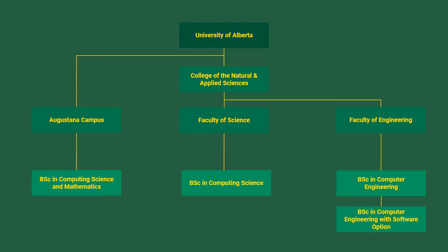At the U of A, we offer programs across our faculties and campuses that will prepare you for careers in both fields. We have a Bachelor of Science in Computing Science and Mathematics through the Augustana campus, a Bachelor of Science in Computing Science through the Faculty of Science, and a Bachelor of Science in Computer Engineering, Software Engineering, or Electrical Engineering through the Faculty of Engineering.